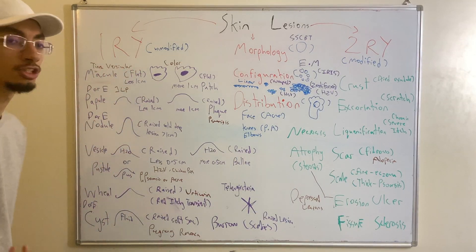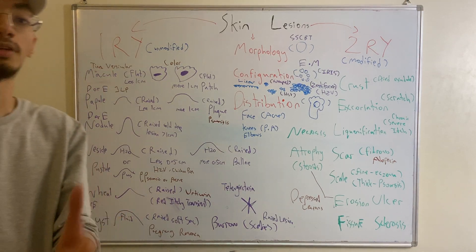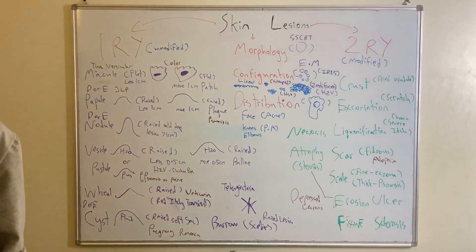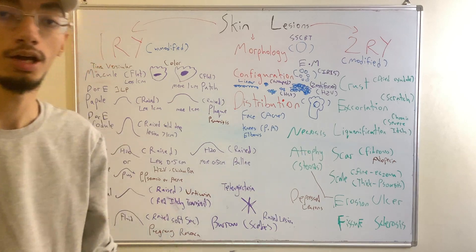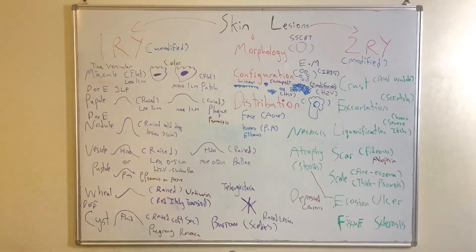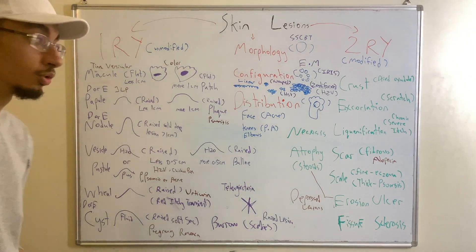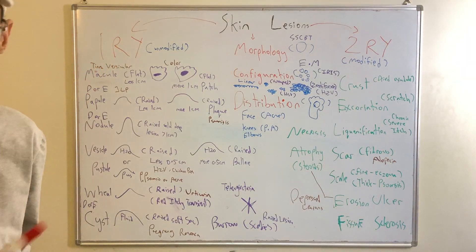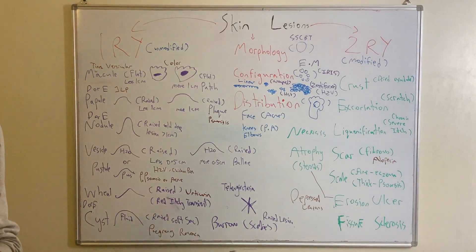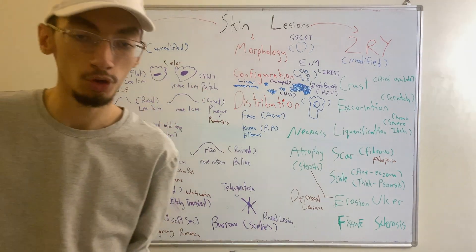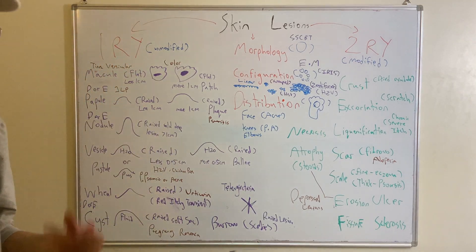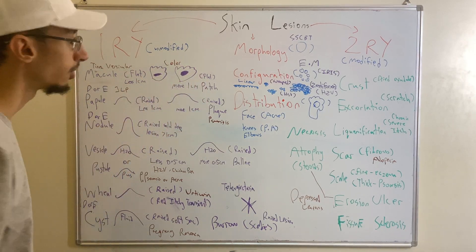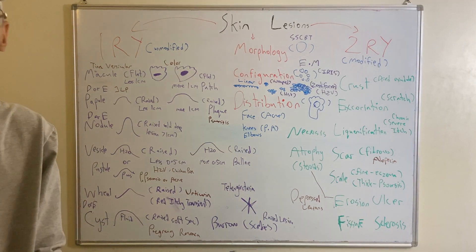A macule can be normal, as in my case, or it can be a sign of fungal infection such as tinea versicolor, where you see multiple macules across the chest, sides, and shoulder. Now, if a flat lesion with a color change is larger than one centimeter, we call it a patch. A macule is the 'little brother' and the patch is the 'big brother' — the only difference is size. Patches are seen in vitiligo, where patients have white patches on their hands.